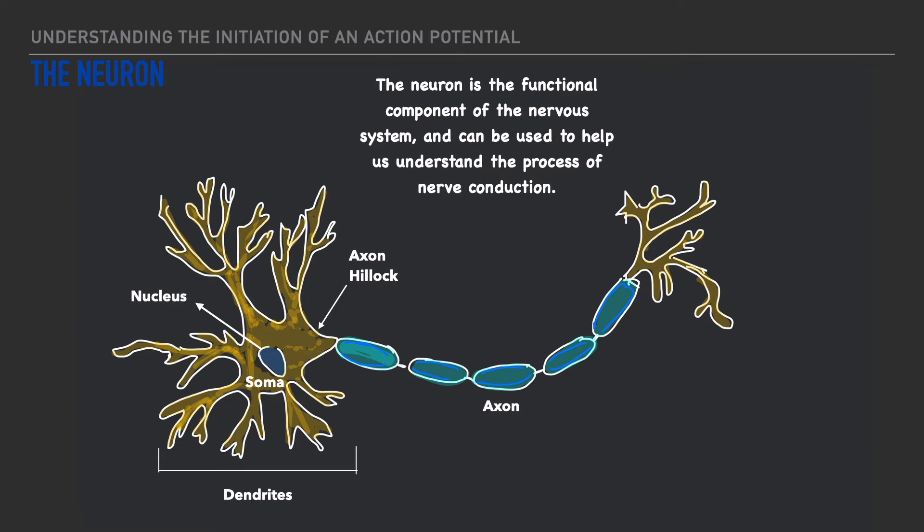Now in between the axon we have gaps or spaces referred to as nodes of Ranvier and at the end of a neuron we have the axon terminal which signals the end of the neuron and it's also connected to other dendrites.